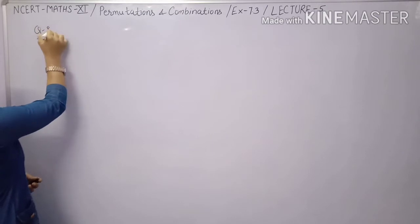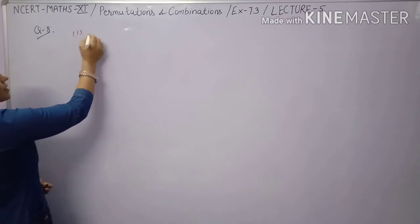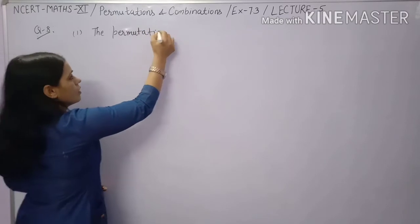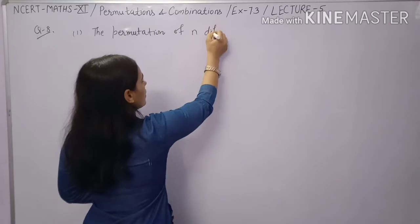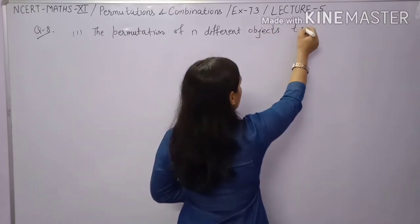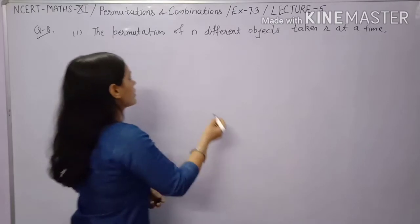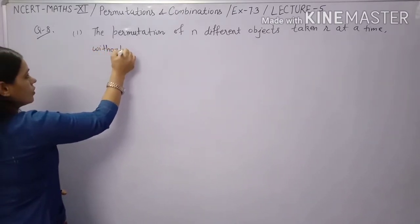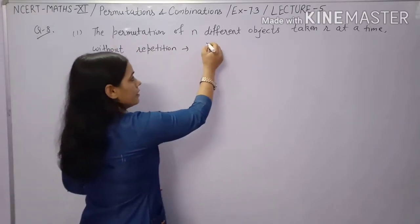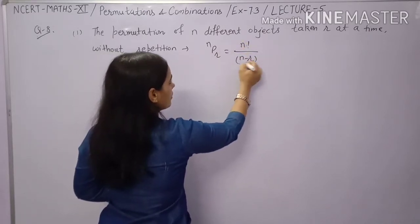Let's recall the definitions from Exercise 7.3. The first type is: permutation of n different objects taken r at a time without repetition.